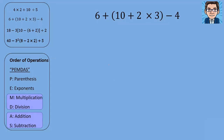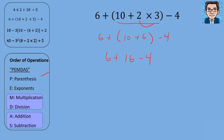The next problem has no exponents but starts with parentheses. Everything inside parentheses is like a separate equation, so we apply order of operations within them — multiplication before addition. The first step is inside the parentheses: we do 2 times 3 to get 6, then finish evaluating the parentheses. Now we have only addition and subtraction, so we go left to right: 6 plus 16 is 22, and 22 minus 4 gives us 18.